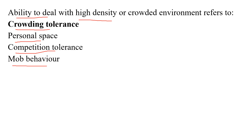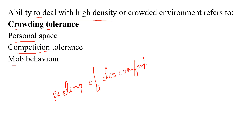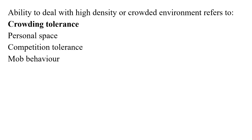The human being also exerts influence on the natural environment to fulfill physical needs. Noise pollution, crowding, and natural disasters are examples of environmental stressors — stimuli or conditions in the environment that create stress for human beings. Crowding refers to the feeling of discomfort when there are too many people or things around us, giving a sense of physical restriction and lack of privacy. People differ in the degree to which they show negative effects of crowding.